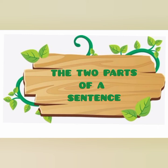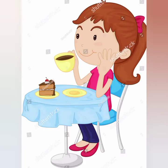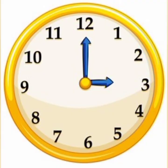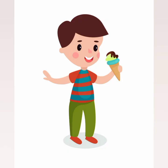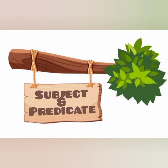Let's look at a few examples. First picture says: the girl is drinking tea. Second one: a clock tells the time. Third: the cow eats grass. And the last one says: Bahadur is eating an ice cream.